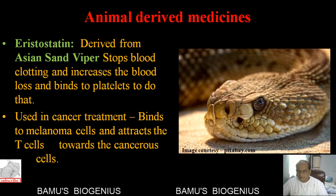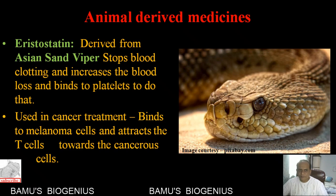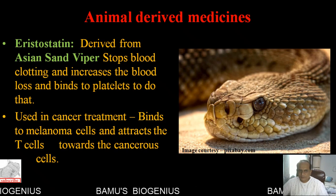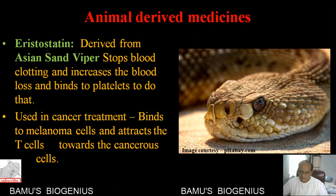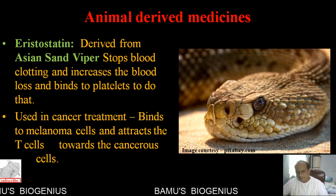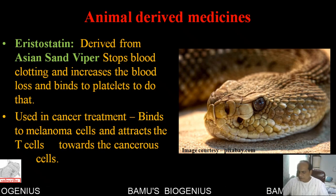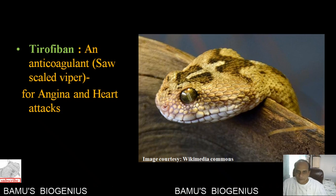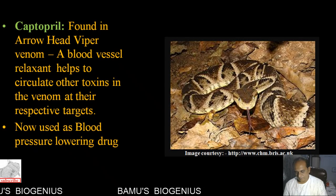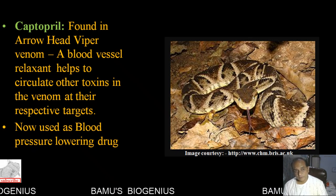Like plants, certain drugs are also derived from animals. Aristostatin is derived from the venom of Asian pit viper and is used against cancer - it binds to melanoma cells and attracts T-cells towards cancerous cells so they can kill them. Another drug, tirofiban, is an anticoagulant derived from saw-scaled viper venom, used against angina and heart attacks. Another drug derived from animal sources is captopril.